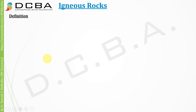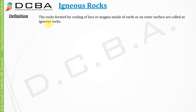In today's lecture we will be starting with igneous rocks. These are the second type of rocks. In the previous video lecture we studied sedimentary rocks. The igneous rocks are formed by cooling of lava or magma inside the earth or on the outer surface of the earth.